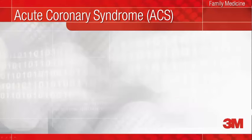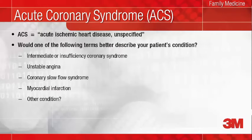As physicians, we know what the clinical term acute coronary syndrome means, but in ICD-10, acute coronary syndrome is assigned to the nonspecific diagnosis code of acute ischemic heart disease unspecified. If you can describe ACS more specifically as intermediate or insufficiency coronary syndrome, unstable angina, or coronary slow flow syndrome, these terms rather than ACS should be documented and will result in codes that give a more accurate picture of what you are treating.